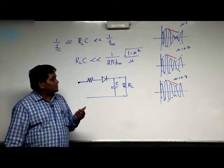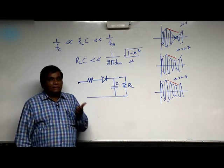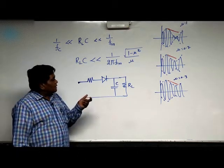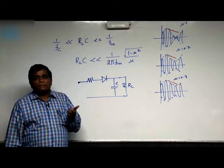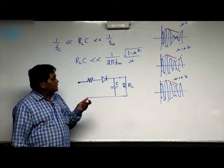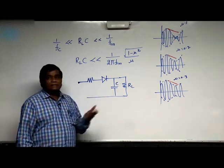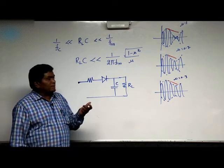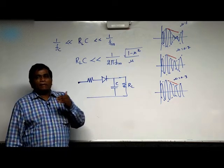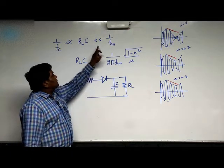Envelope detector is used for demodulating the AM signals, but the time constant is one of the very important parameters. The charging time constant is always neglected and discharging time constant should be very high, but always upper limit and lower limit are required.